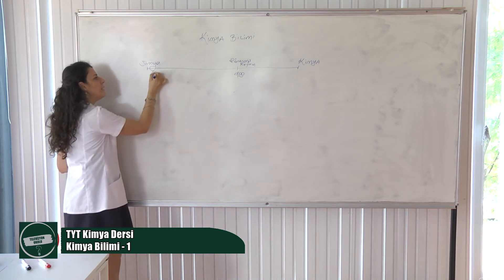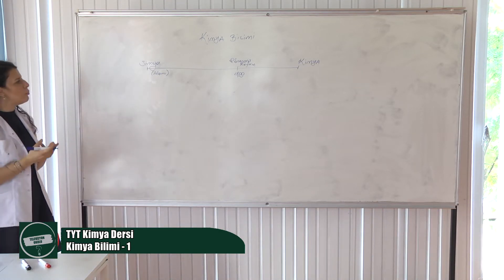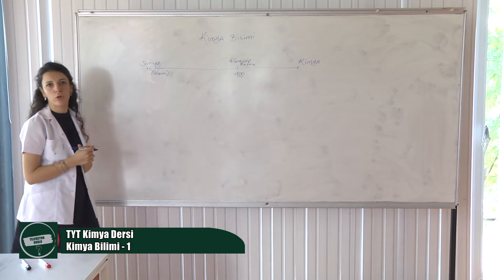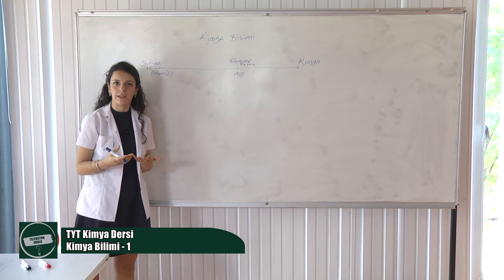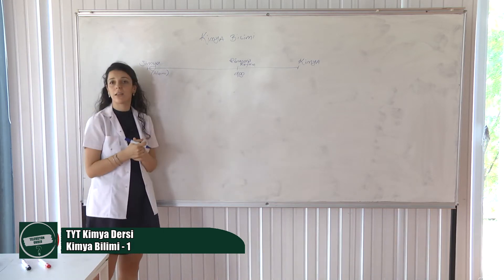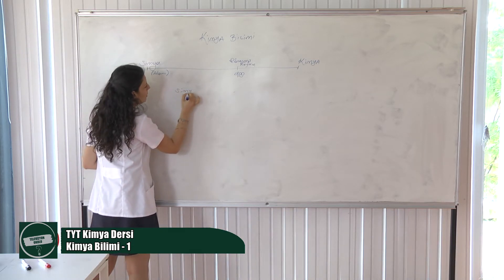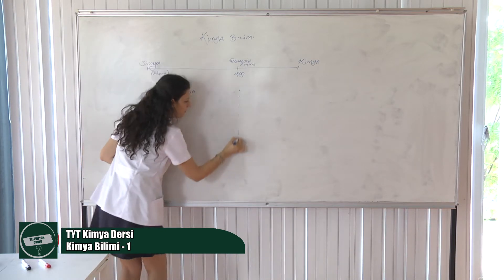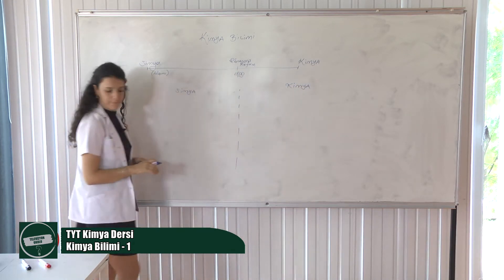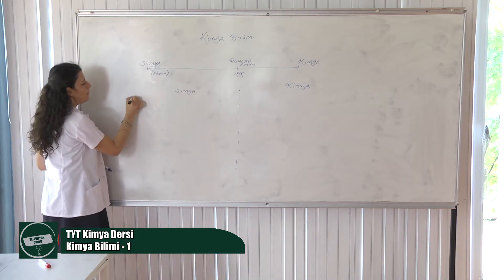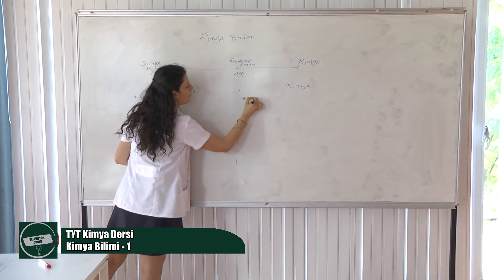Simya'nın diğer adı Alşime. Biz simya ile kimya arasındaki farktan tam olarak sorumlu muyuz? Aslında değiliz. Ama kimyanın alt bilim dallarını, kimyanın sembolik dilini öğrenebilmemiz için simya ile kimya arasındaki farkı bilebiliyor olmamız lazım. Şimdi birincisi, simya bir uğraş, kimya ise bir bilim dalı.